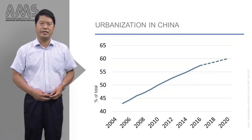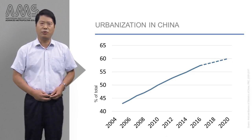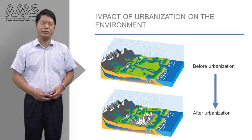China has experienced a rapid urbanization process. From 1952 to 2008, the urban population as a percentage of the total population increased from 12.5 to 45.7 percent. In 2011, 50 percent of the Chinese population was living in urban areas, and it is expected that this will be 60 percent in 2020. Urbanization leads to social and economic progress. However, it also has an impact on the urban water system.